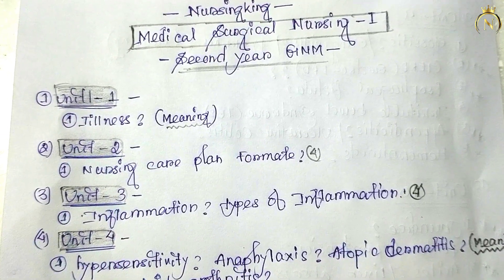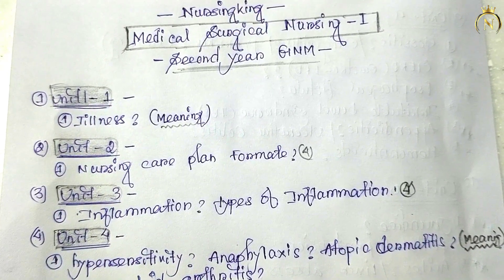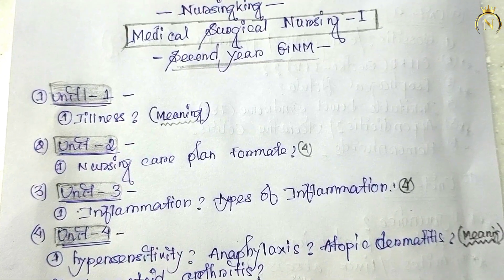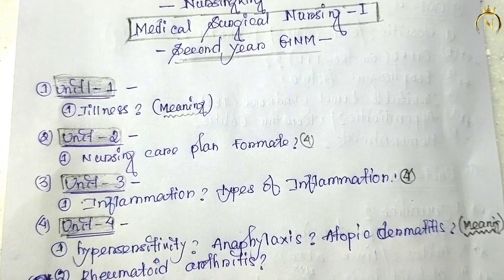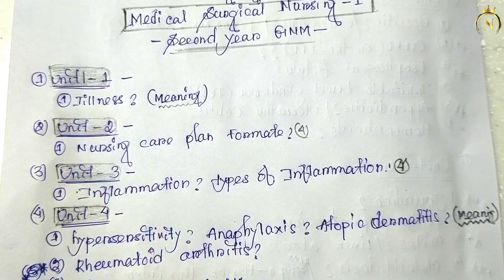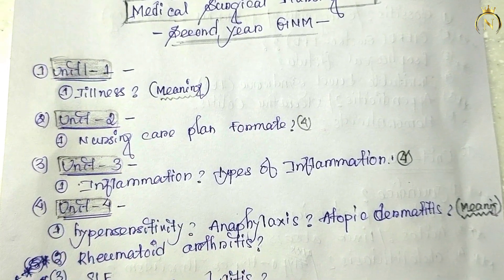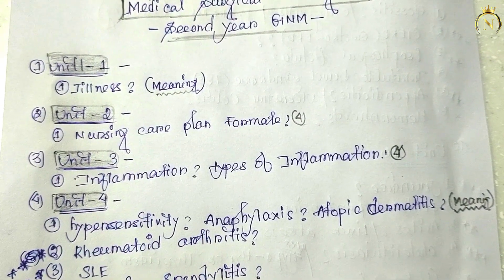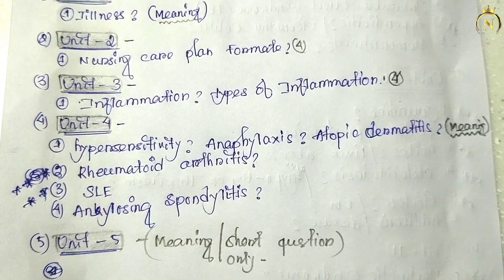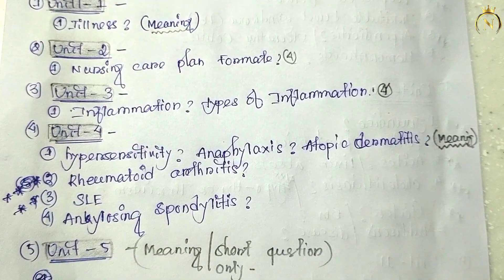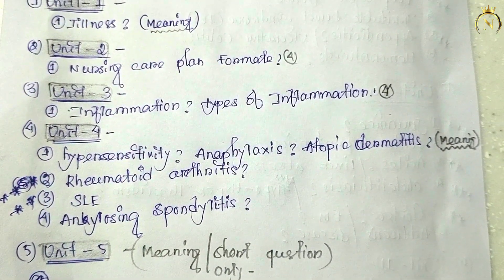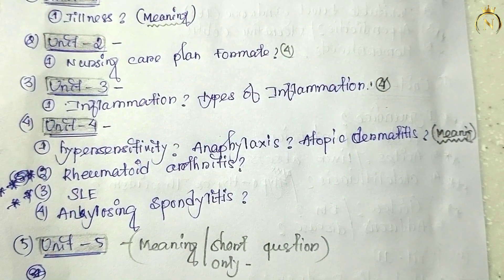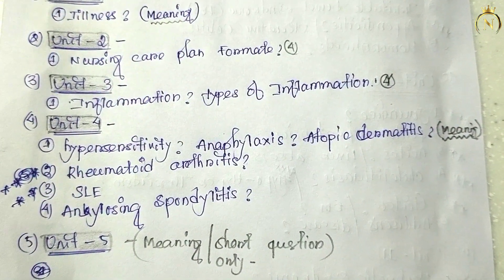Let's start the video. Unit one is not that important — meaning, units one, two, and three are not important; long questions will not come from those three units. Unit two: only the nursing care plan format you can prepare, like assessment, diagnosis, goal, and so on. Unit three: only sometimes they ask inflammation and types of inflammation — very rarely it comes, but it's not a priority.